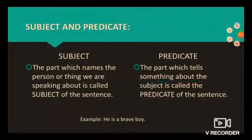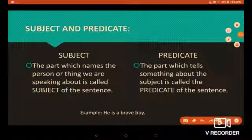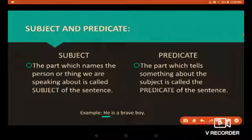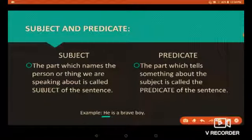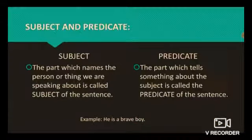Consider the sentence: 'He is a brave boy.' In this sentence, we are speaking about 'he', so 'he' is the subject of the sentence. 'A brave boy' is the predicate of the sentence because it describes the subject.